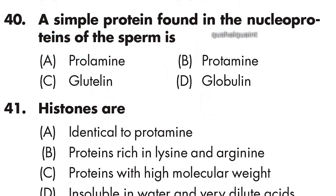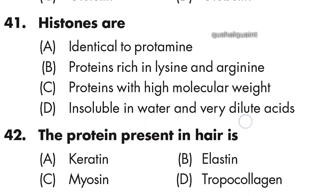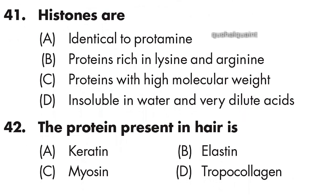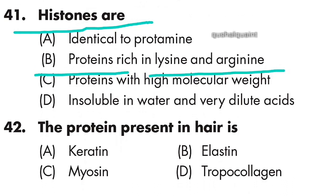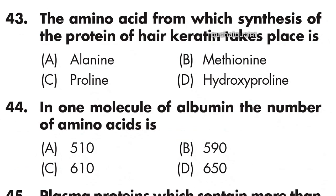Question 41: Histones are proteins rich in lysine and arginine — option B is right. Question 42: The protein present in hair is — option A is right — keratin. Question 43: The amino acid from which synthesis of the protein of hair keratin takes place is —